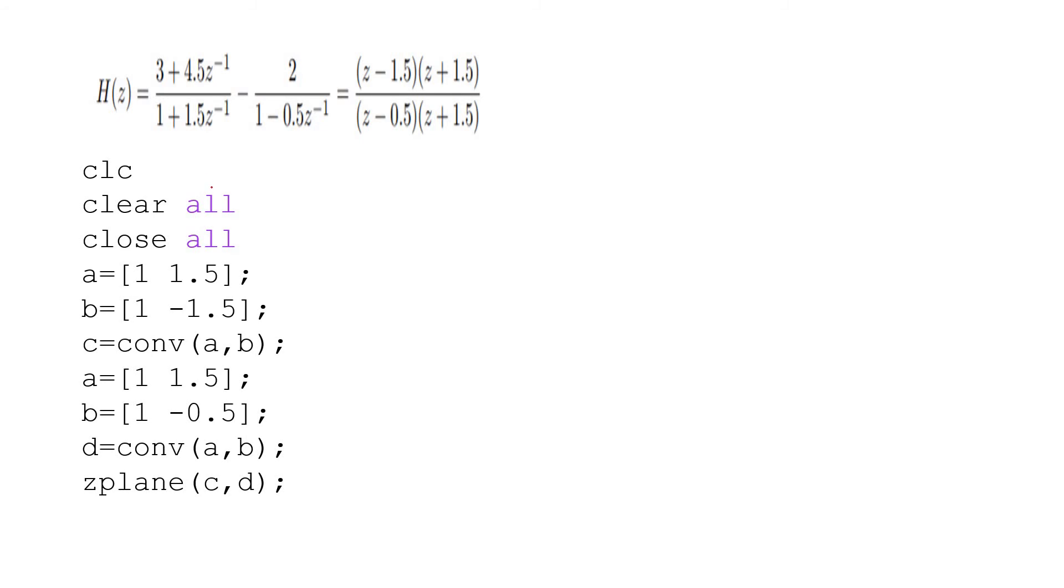So this is our transfer function: H(z) equals (z - 1.5)(z + 1.5) divided by (z - 0.5)(z + 1.5). So what we will do: simple code, CLC, clear all, close all. Then write the first polynomial: 1 and -1.5 will be the coefficients, and another one will be 1, 1.5. So I have written here [1, 1.5], [1, -1.5]. Now we have to multiply these two. So what I have written: c equals conv(a, b). Same goes for denominator: [1, -0.5], [1, 1.5].